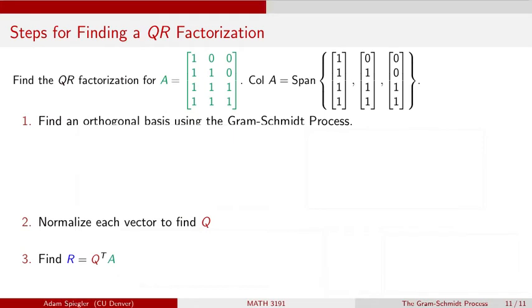Let's go through the steps for this QR factorization. To illustrate this process, let's consider the 4 by 3 matrix A, whose first column is (1, 1, 1, 1), second column is (0, 1, 1, 1), and third column is (0, 0, 1, 1). We don't need much convincing that these three vectors are all linearly independent. So the column space for matrix A is going to be spanned by these three column vectors.